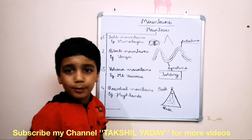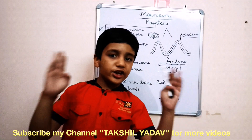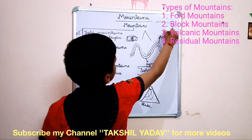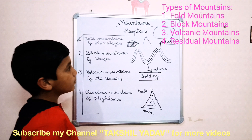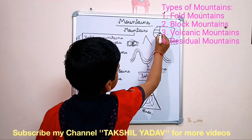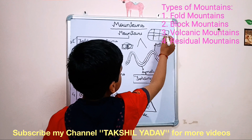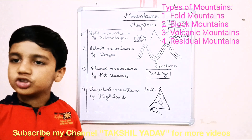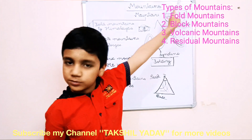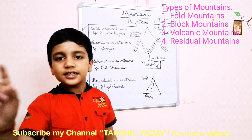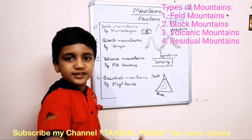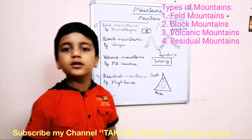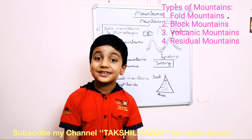Block mountains are created when a large area or large mass is broken up into several blocks due to forces of compression. Suppose this is a large plain — due to forces of compression, it breaks up into many parts. The upper rocks that are pushed up to form the mountains are known as horsts, and the lower rocks that stay on the ground are known as grabens, also called rift valleys. These may form small or extensive rift valley systems.